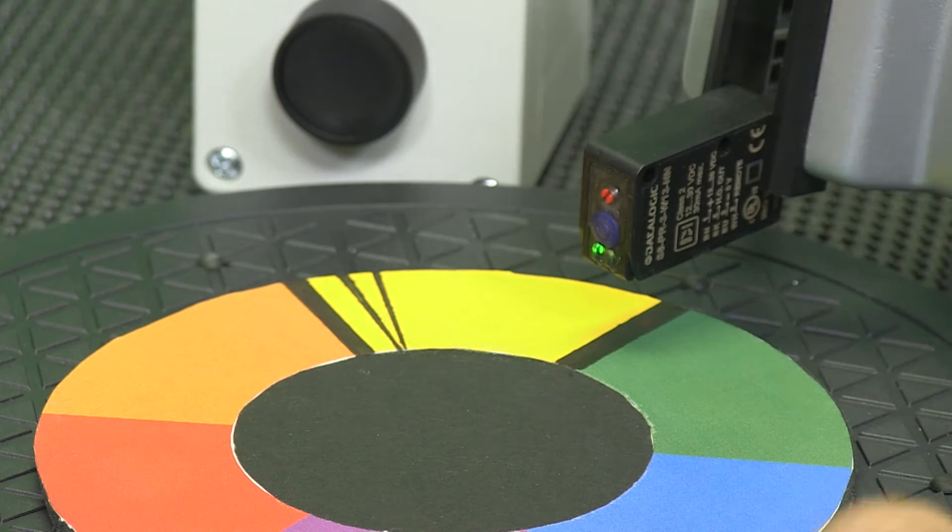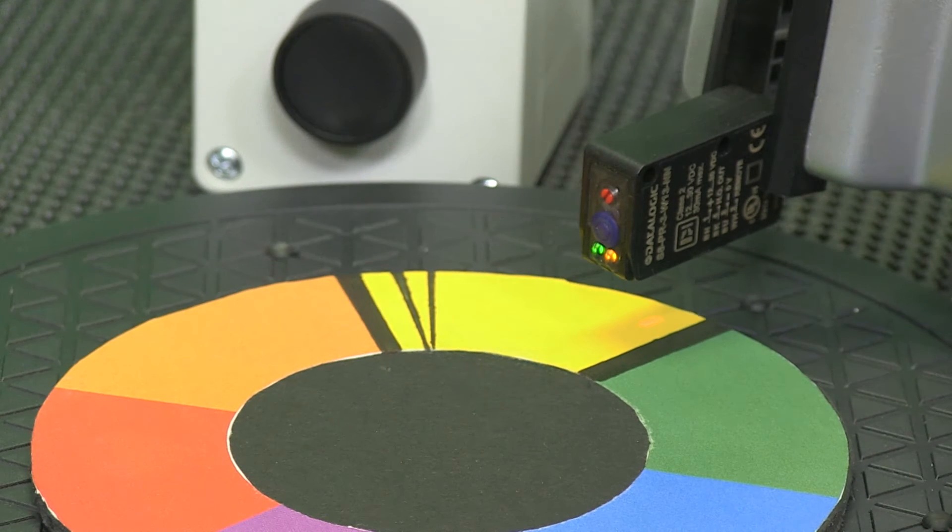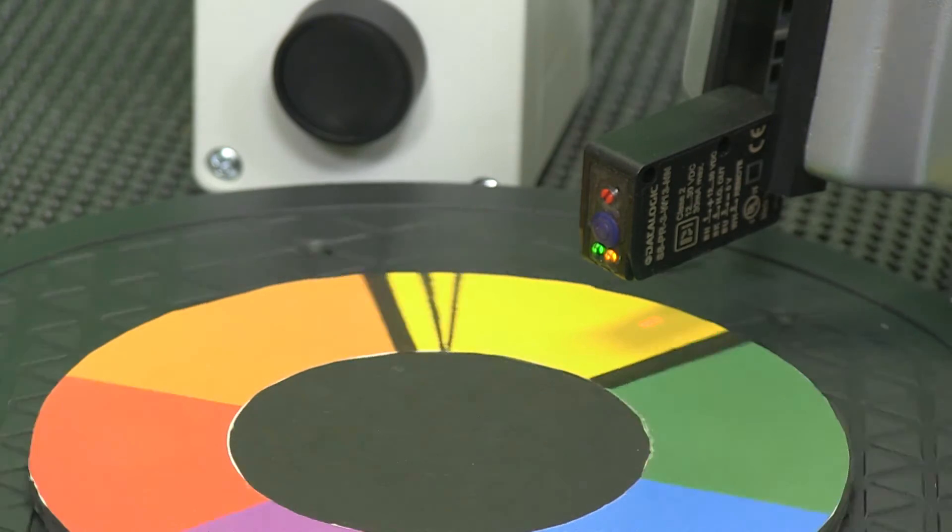Instead of using the set push button on the sensor, the white wire is wired to a push button with positive voltage. When the push button is pressed, the sensor detection functions can be set.